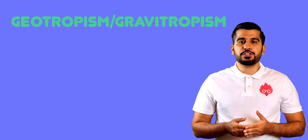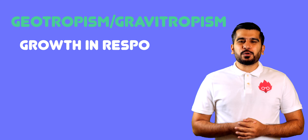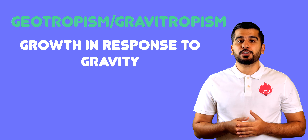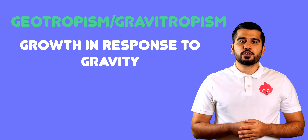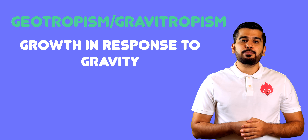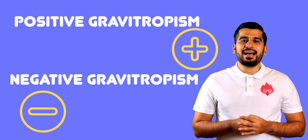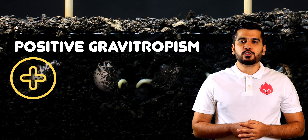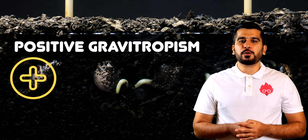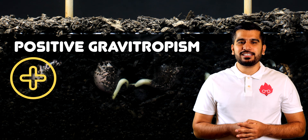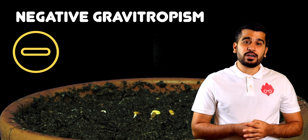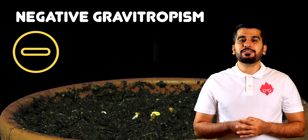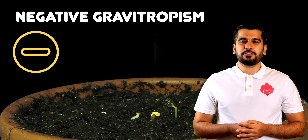Gravitropism, or geotropism, is growth in response to gravity. Gravitropism can be both positive and negative. In positive gravitropism, you have growth towards gravity, and in negative gravitropism, you have growth away from gravity.